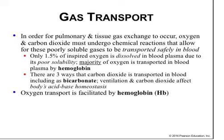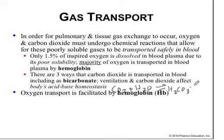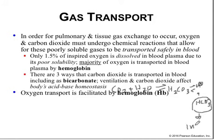Carbon dioxide and ventilation affect the body's acid-base homeostasis. The equation is: CO2 plus water, which can dissociate into protons and bicarbonate. It is in this bicarbonate form that CO2 is primarily transported in the plasma.